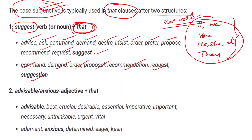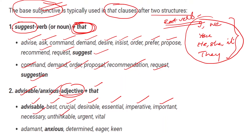The second structure involves verbs related with advice or anxiety — adjectives. The adjectives related with advice or showing anxiety, then plus 'that.' Look at the words: advisable, best, crucial, desirable, essential, imperative, important, necessary, unthinkable, urgent, vital, then adamant, anxious, determined, eager, key. You have to remember all these verbs, nouns, and adjectives to know where we have to use the base Subjunctive form of verb.